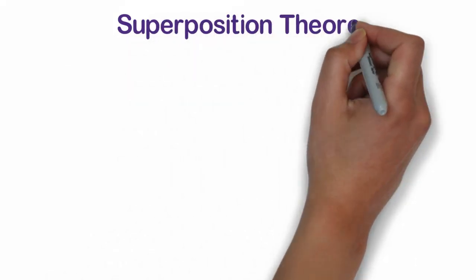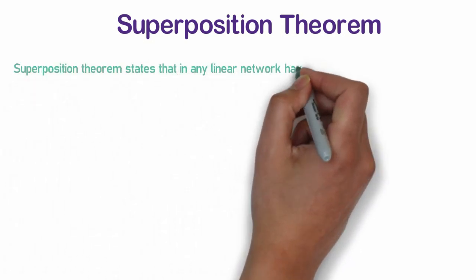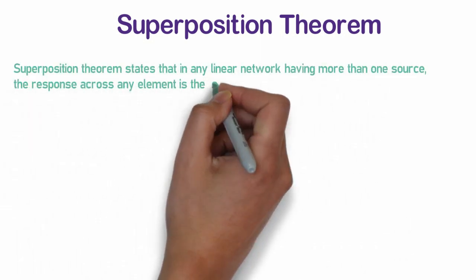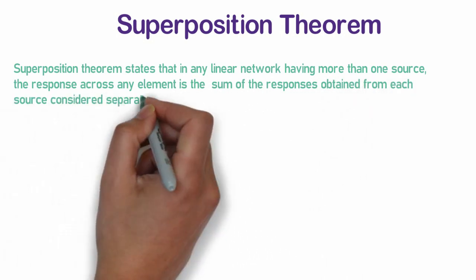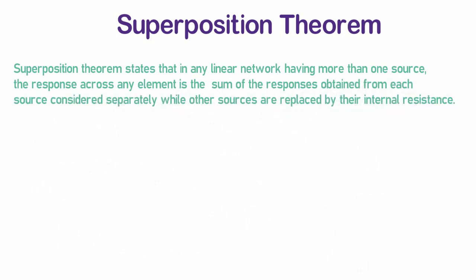Superposition theorem states that in any linear circuits with having more than one source, response across any element can be determined by algebraic sum of response obtained from individual response. Meanwhile, all other sources are supposed to replace with their internal resistance.